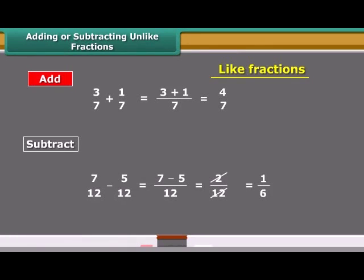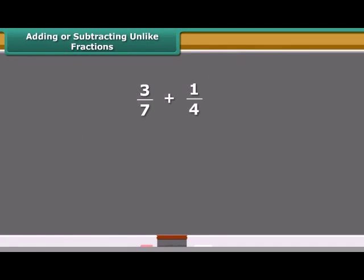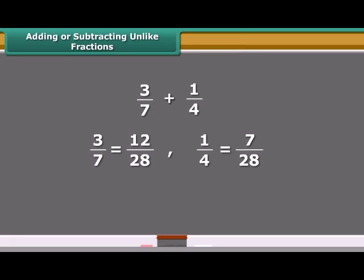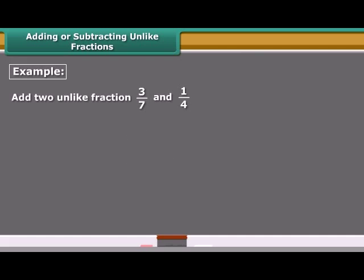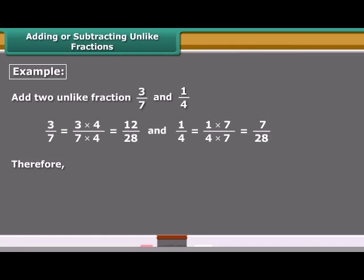We have learned to add and subtract like fractions. It is also not very difficult to add unlike fractions. When we have to add or subtract these fractions, we first find equivalent fractions with the same denominator and then proceed. For example, 3/7 and 1/4 are two unlike fractions. To add them, we find their equivalent fractions with the same denominator: 12/28 and 7/28.